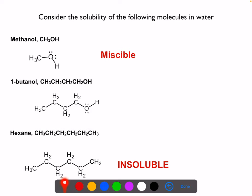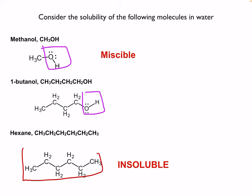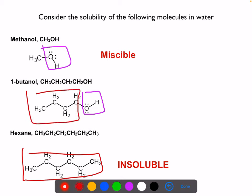1-butanol falls in between. If you look at its structure, part of the molecule looks like methanol and part looks like hexane, so it is partially soluble — it dissolves a little bit. These things aren't always cut and dry.